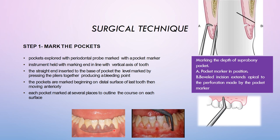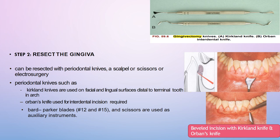Step 2, resecting the gingiva: after creating bleeding points, the gingiva is resected using knives, scalpels, or scissors. The Kirkland knife is used for facial and lingual surfaces, starting from the distal of the terminal tooth in the arch. The Orban's knife is used for interdental incisions. For scalpel use, blades 12 or 15 are mainly used. Scissors are used as auxiliary instruments. The incision is a beveled incision at 45-degree angulation to the gingival surface.